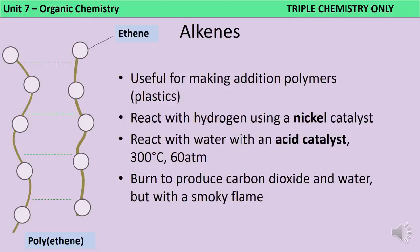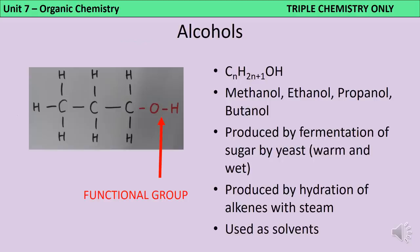Alkenes are useful for making addition polymers such as polythene, polypropene and polybutene. They can be converted back to alkanes by hydrogenation using a nickel catalyst. They also react with water using an acid catalyst at 300°C and 60 atmospheres to make alcohols. Burned as fuels they produce CO₂ and water, but give a smoky flame, making them less ideal as fuels than alkanes.